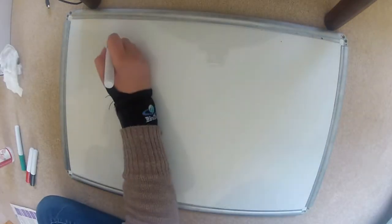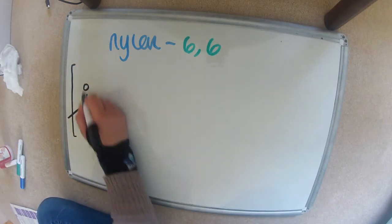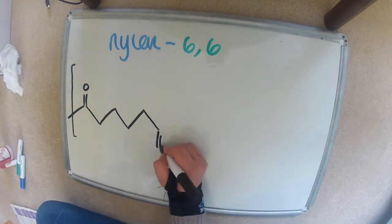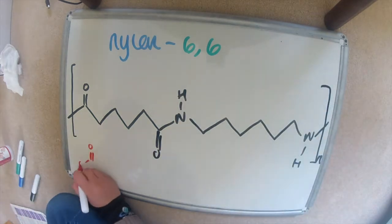So the first one we're going to look at is nylon. So a really common nylon is nylon 6-6. And here I'm drawing out a unit of the polymer. So that will be repeated over and over and over. And here are the monomers.